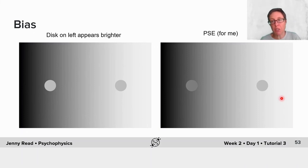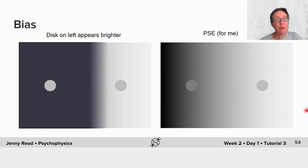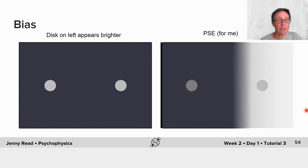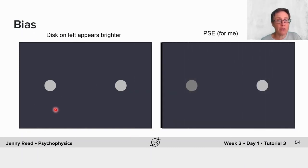I've here tried to adjust the brightness or the luminance of the discs until they appear equally bright to me on this particular display. But as I'm sure you've guessed, in fact, the discs in this image are of the same physical luminance. This point of subjective equivalence has the disc on the left being actually somewhat dimmer.